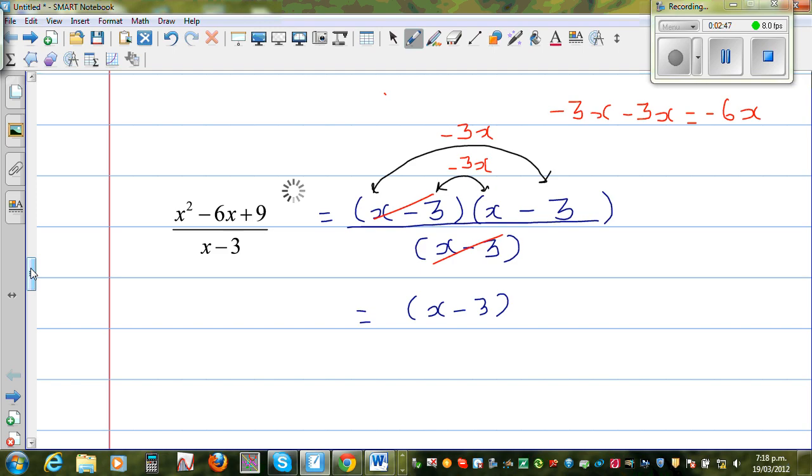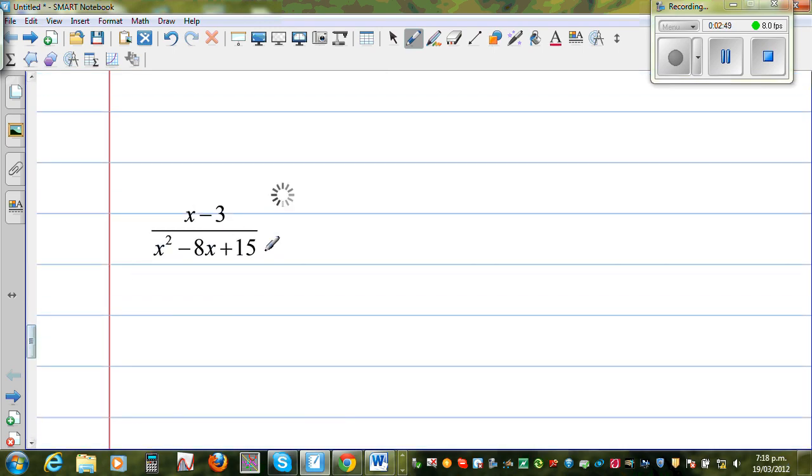Okay. Let's look at one more question. Here we cannot simplify the numerator, but we can simplify the denominator. So the numerator is nothing but x minus 3. And the denominator, I'll first start with x and x in the two brackets.